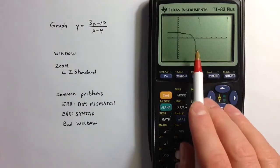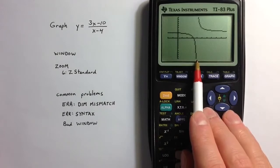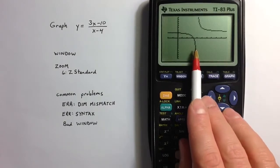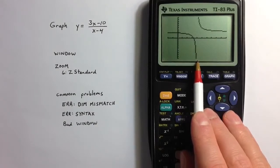Now positive 4 is right in the middle of the screen. And so the calculator chooses that positive 4 as one of its x values and plugs it into the expression.